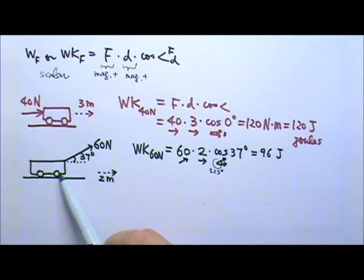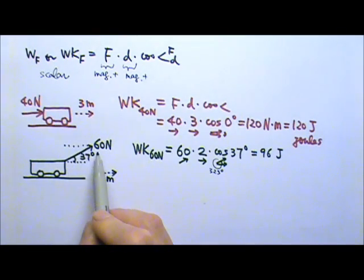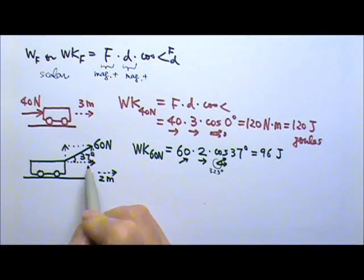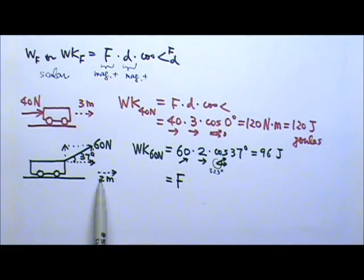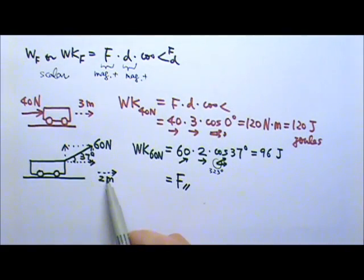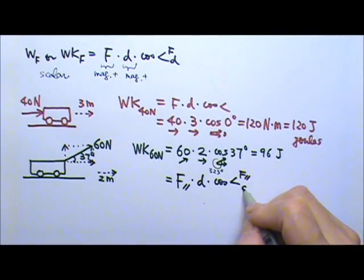That means the force gives 96 joules of energy to the cart. Now let's take another look at this slanted force. We can find the components — the horizontal and vertical components. The upward component and the component to the right. Which of these two components is the one doing the work? It's the horizontal component — the one parallel to the displacement. So another way to find the work done by a force is to use the force's component that is parallel to the displacement, then multiply by the displacement times cosine of the angle between the parallel component and the displacement.